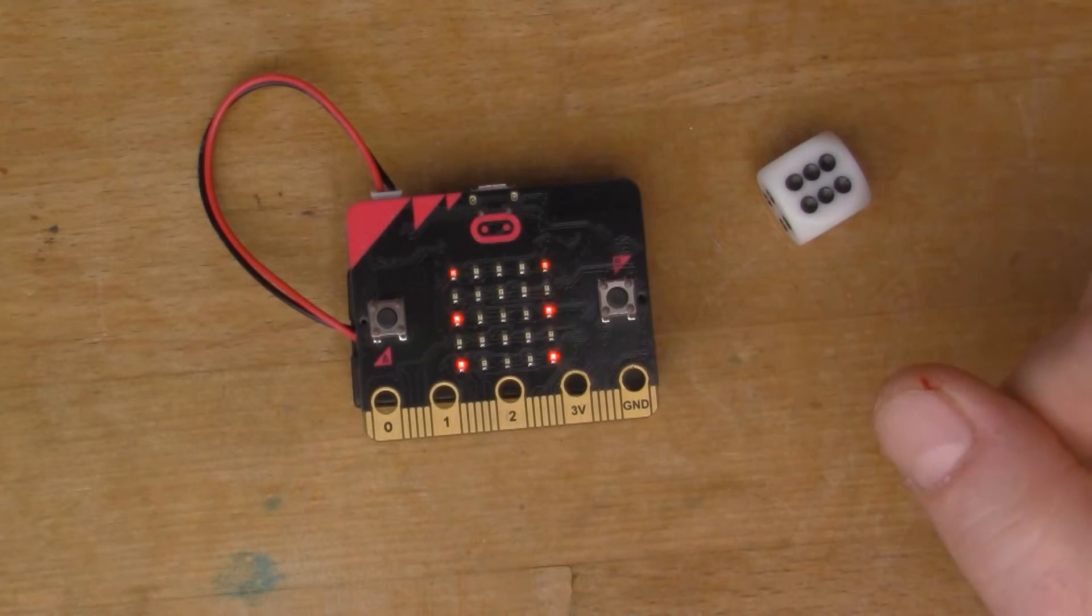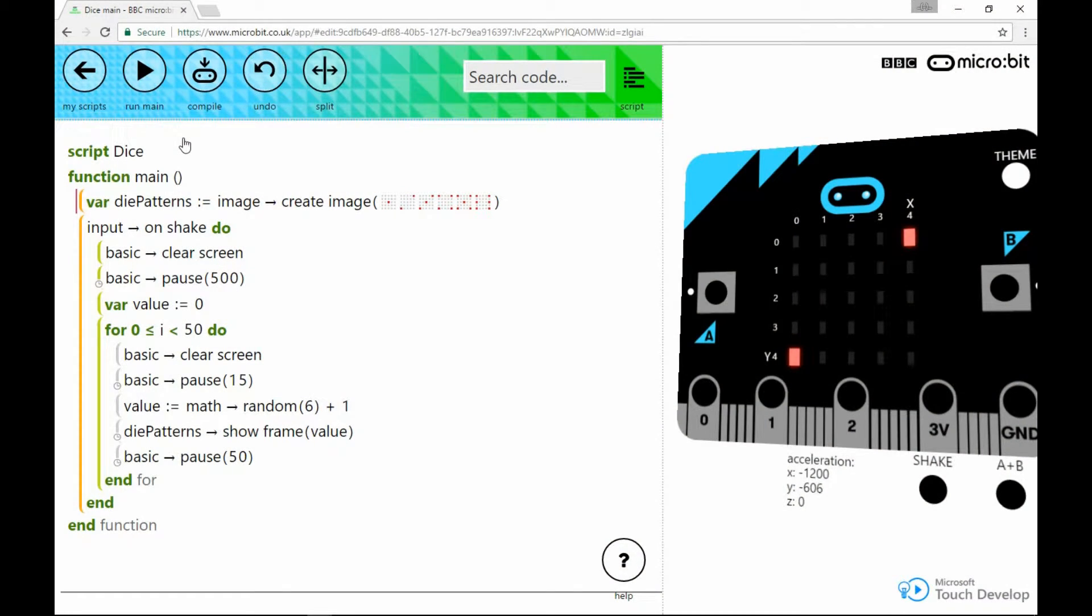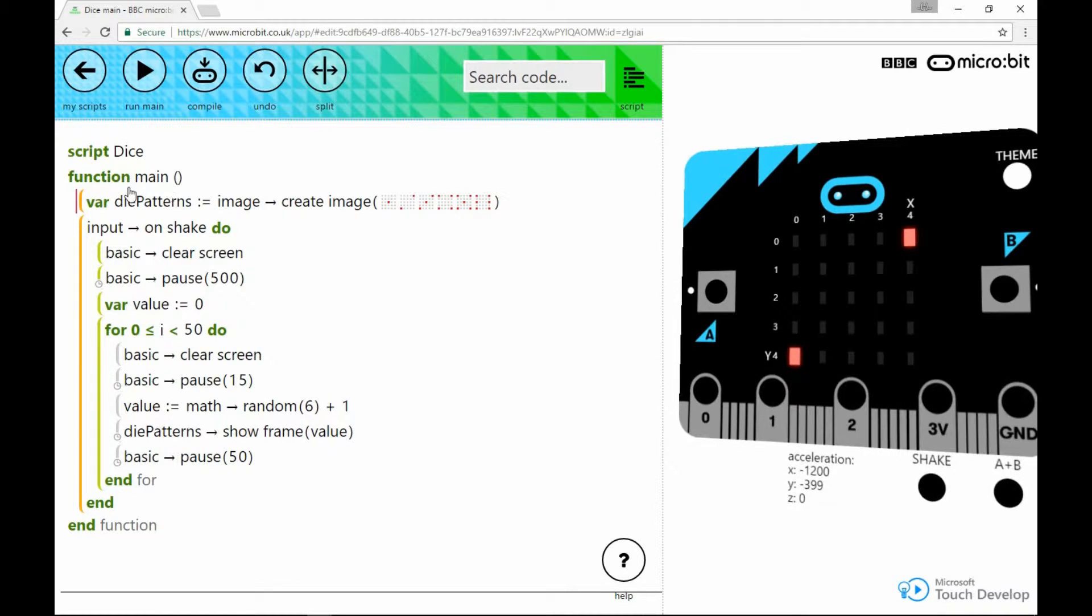I'll leave a link to my code on the BBC micro:bit site down in the links below. Let me show you the code that I wrote. I'll just give you a quick walkthrough of the code that I wrote to make the micro:bit do this. So here we are online on the micro:bit site, the BBC micro:bit site, and I'm in the Microsoft Touch Develop tool.